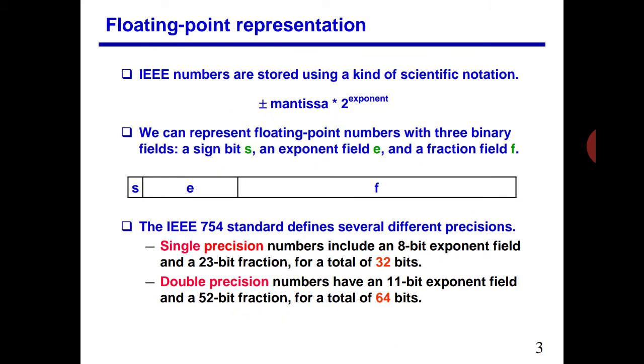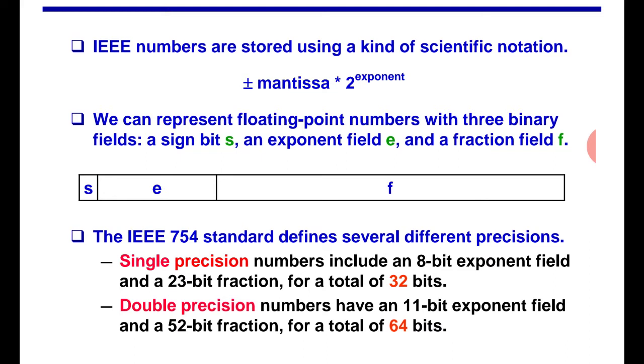First of all, IEEE numbers are stored using a kind of scientific notation, that is mantissa and exponent. What is mantissa, what is exponent, we will understand each part. First, the number, fractional number may have some sign either minus or plus. If there is minus, the sign will be represented in the IEEE format. Mantissa, that is the fractional part and exponent part, that is 2 raised to power.